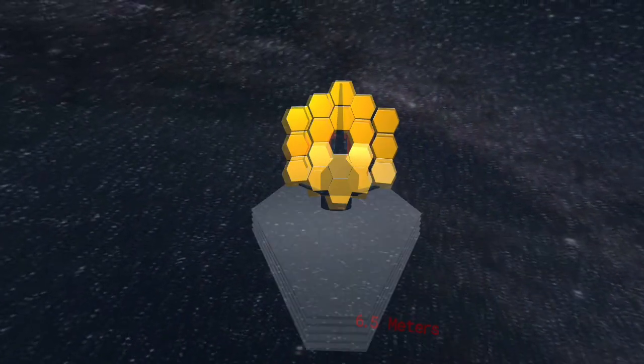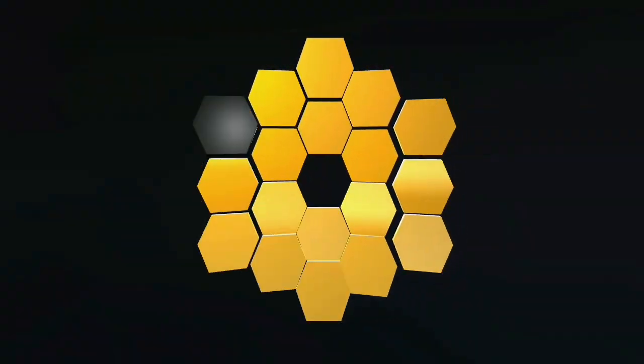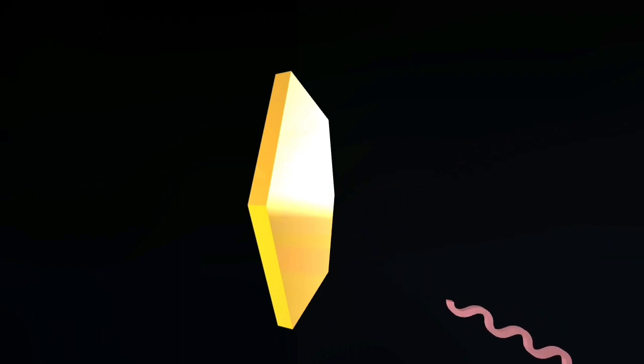But the question is, how exactly does the James Webb Telescope work? Well, it all comes down to this giant primary mirror, which is made up of 18 small gold-plated hexagonal beryllium mirrors that are designed to reflect faint infrared light.